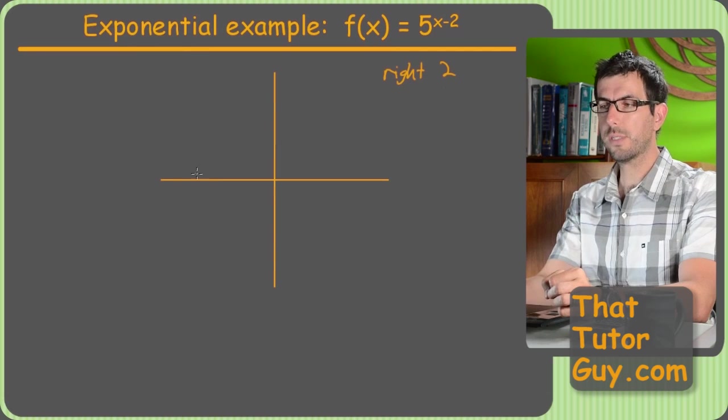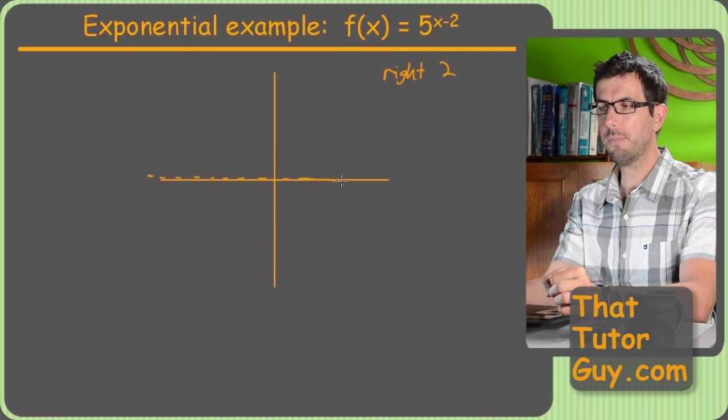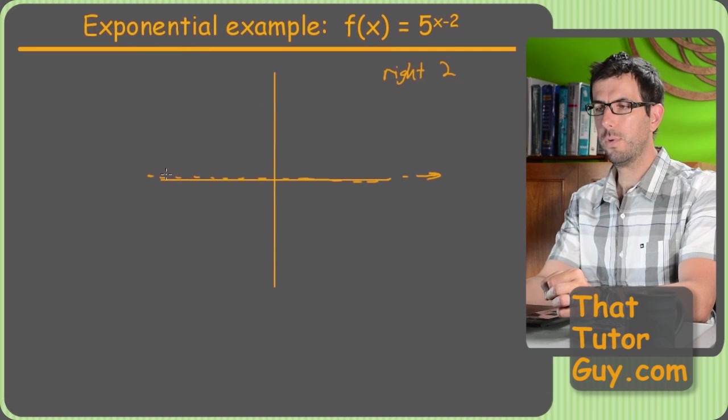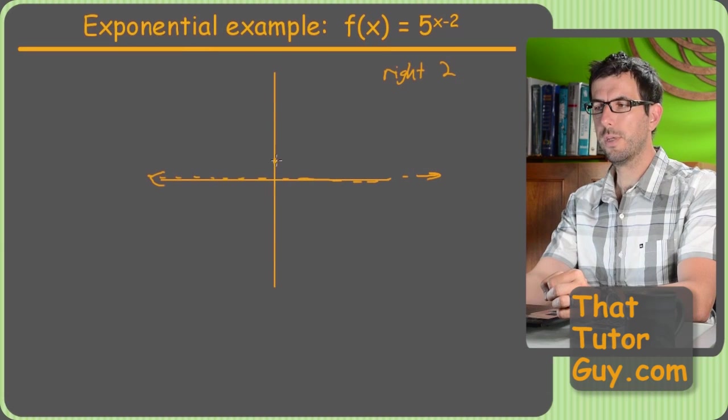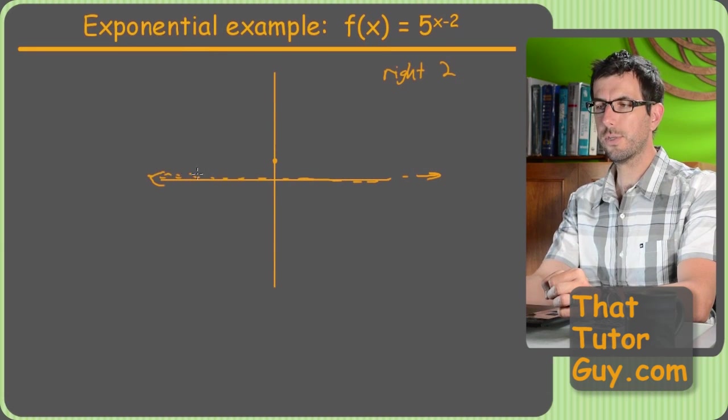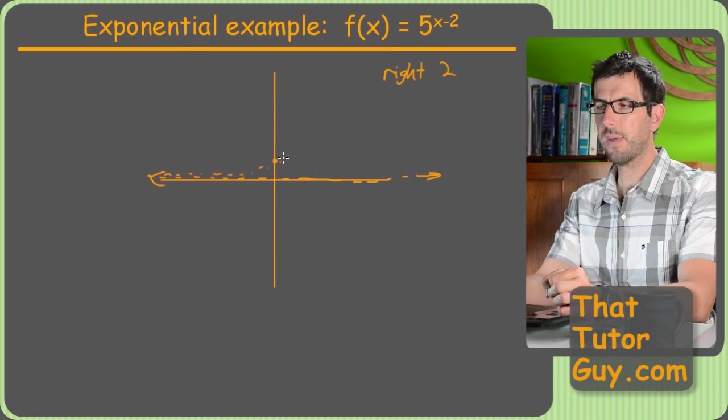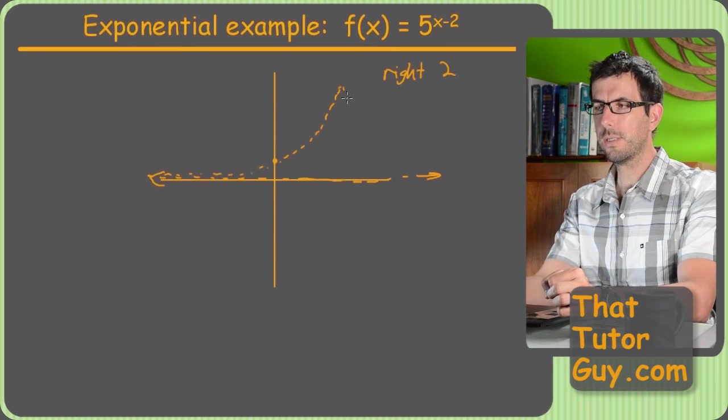And then there's no vertical shift. So what does that mean? That means my horizontal asymptote is going to stay exactly where it should have been, which is the x-axis. Now my parent graph would have gone through this point, because every exponential goes through (0, 1). So that's kind of my parent graph.